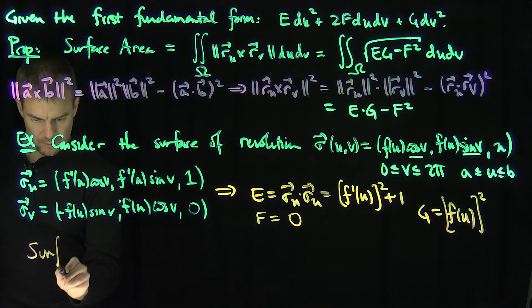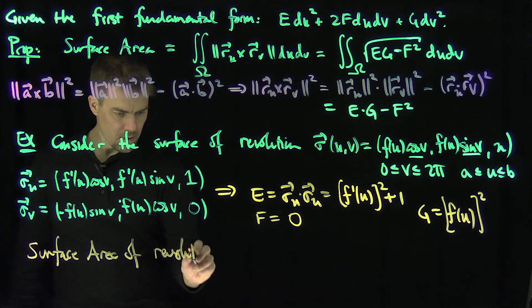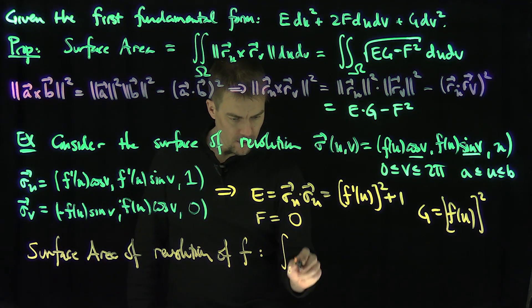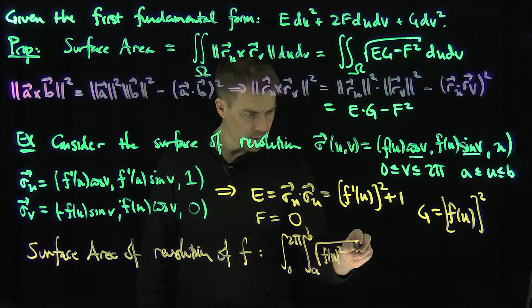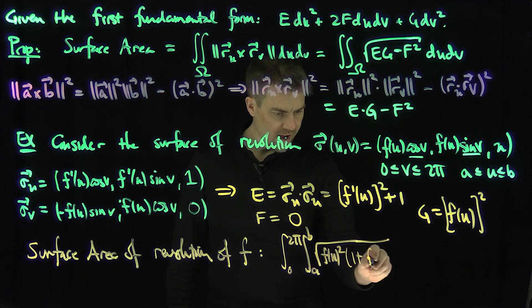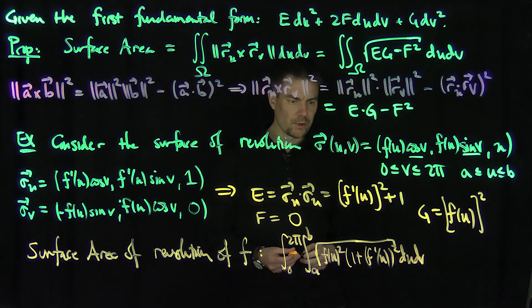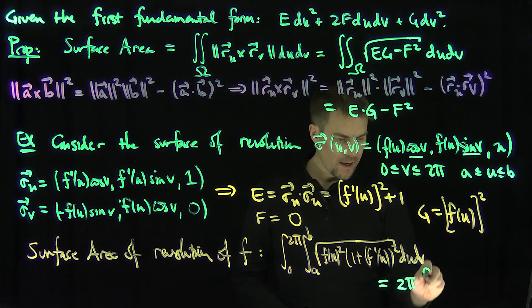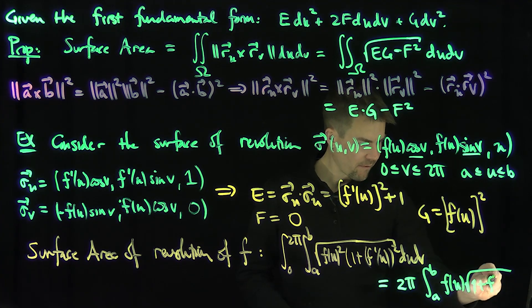So the surface area of revolution of a function f is given by the double integral from 0 to 2π and from a to b of the square root of EG minus F squared, which equals the square root of f(u)² times (1 + f′(u)²), du dv.